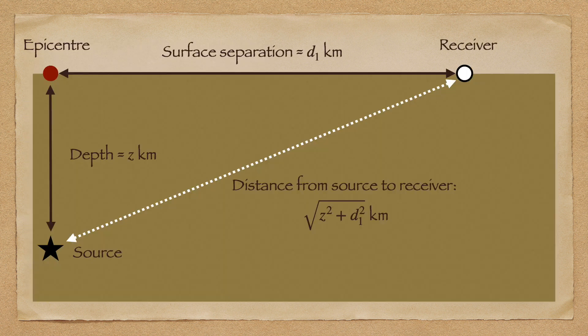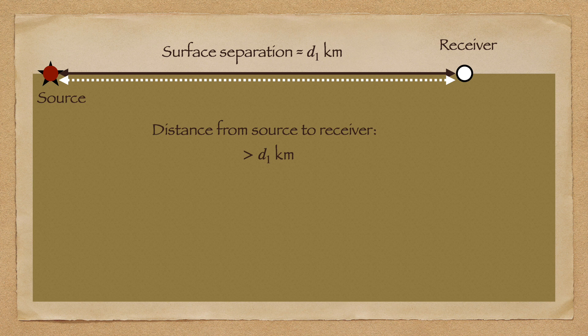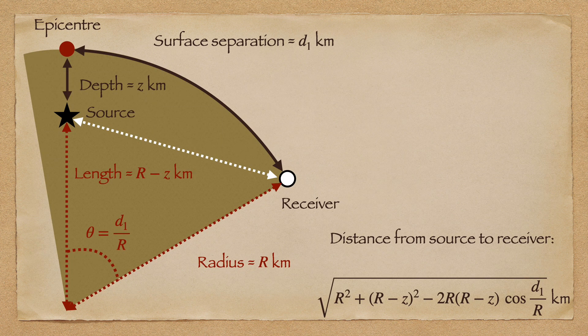Now it's time to look at some geometry. If we know the depth of the seismic source and the surface separation between the source and the receiver, in the flat Earth case, we can calculate the distance that the wavefront must travel to get from the source to the receiver. It's a simple application of Pythagoras' theorem. If the source is at the surface, then things become even simpler — the distance from source to receiver is simply the surface separation. In the spheroidal case, we can similarly calculate the straight-line distance from a source at a given depth to a receiver at a given surface separation from the epicenter. The mathematics is a little more complicated in this instance, but boils down to a straightforward application of the cosine rule.